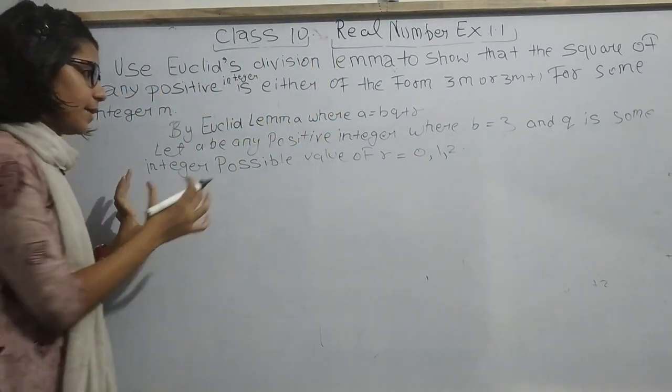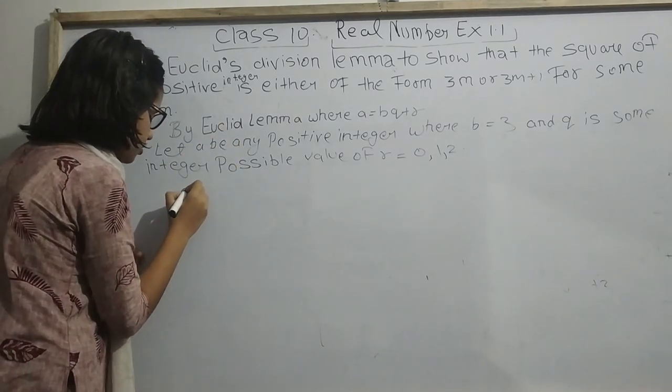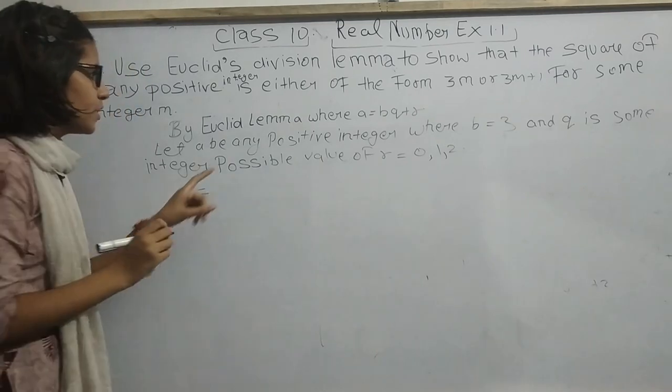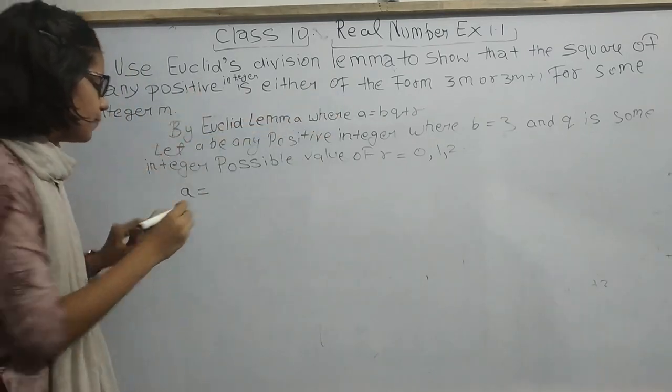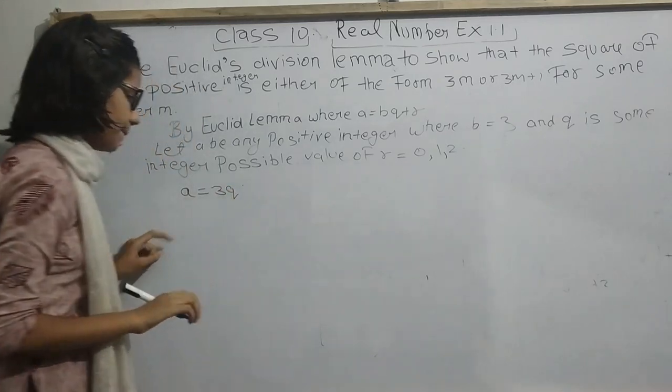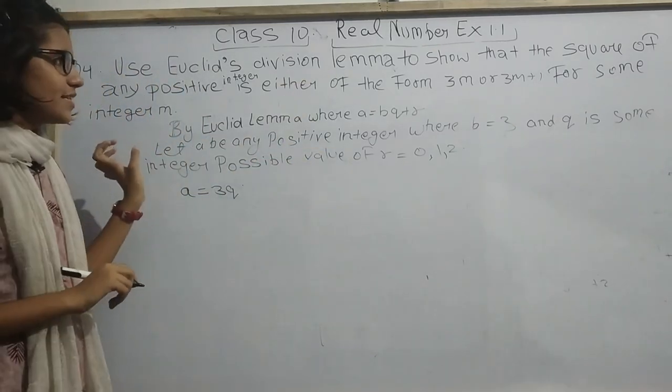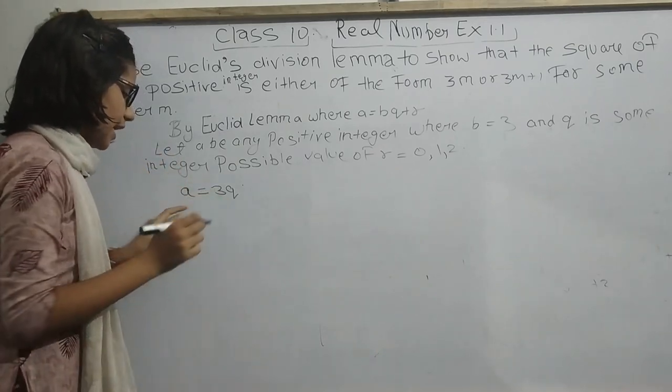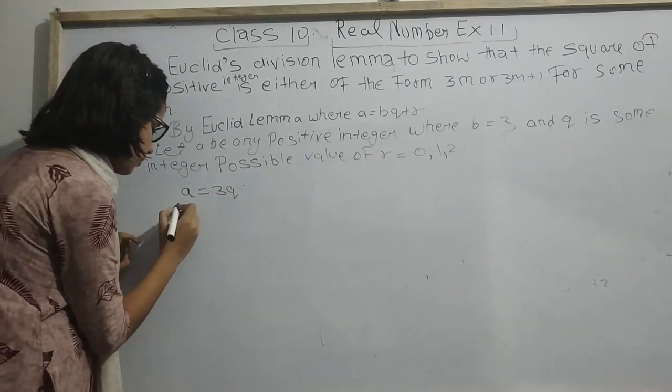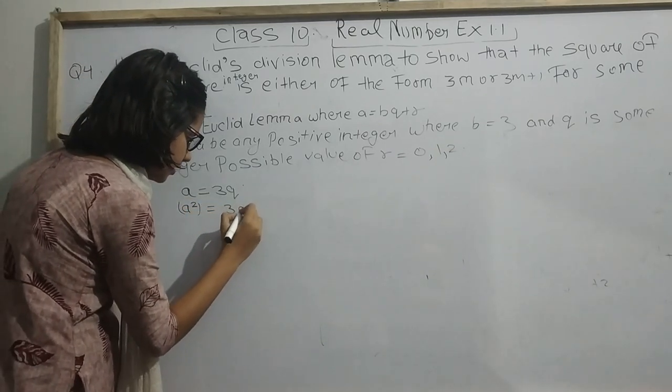Now the main point. We can write A equals 3Q, where R value is 0. The question asks us to square both sides. So A square equals 3Q square.